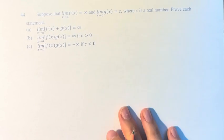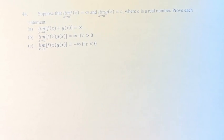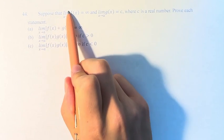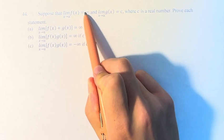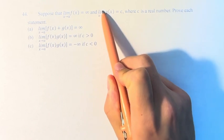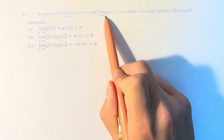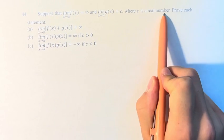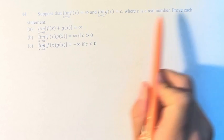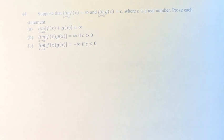Hello and welcome back to another video. In this problem we're told that suppose the limit as x approaches a of f of x is equal to infinity, and the limit as x approaches a of g of x equals c, where c is a real number. We're asked to prove each statement.